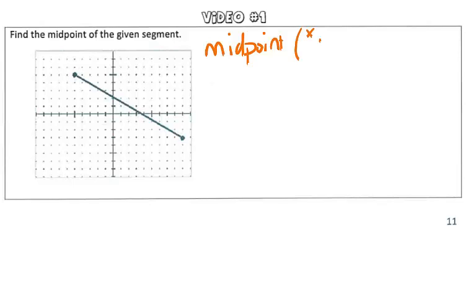So, to calculate that, we have x1 plus x2 divided by 2, and y1 plus y2 divided by 2. And this will allow us to calculate the midpoint of any line segment.